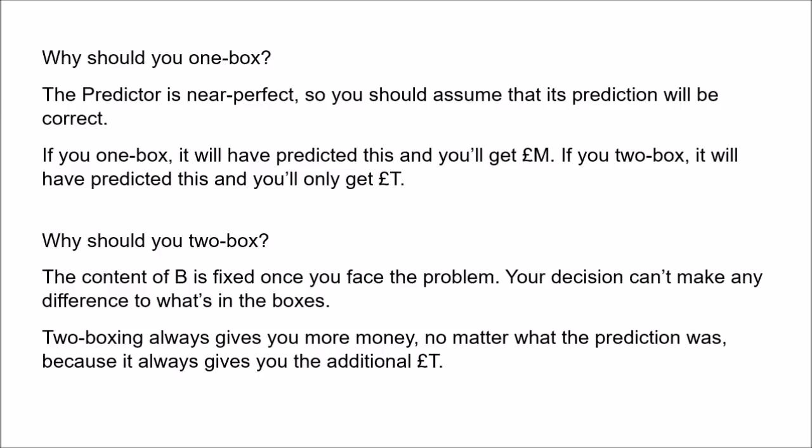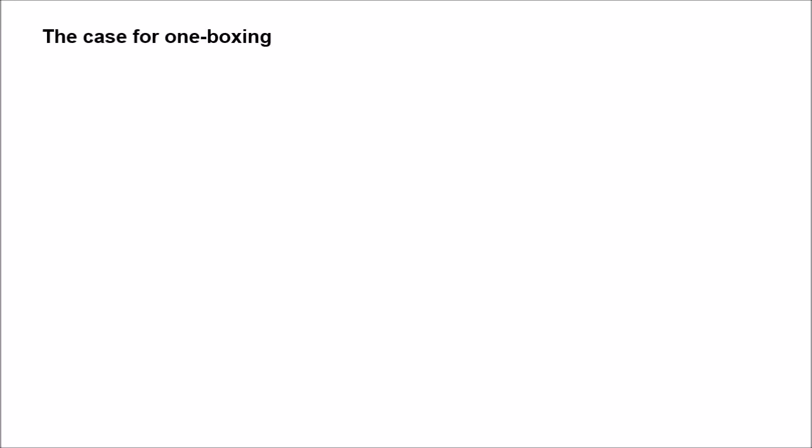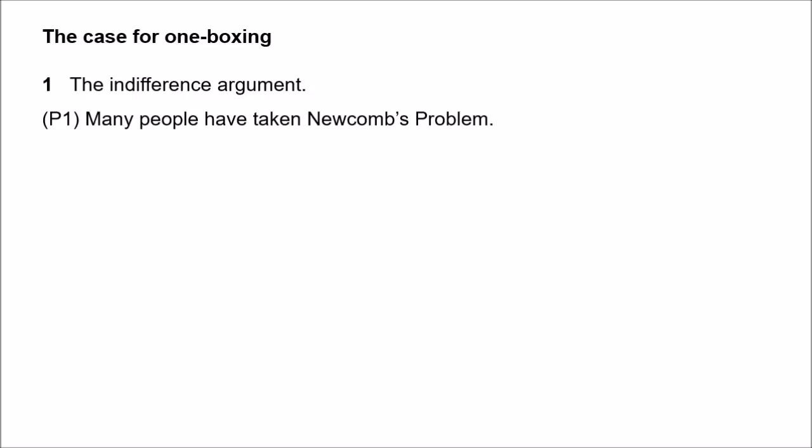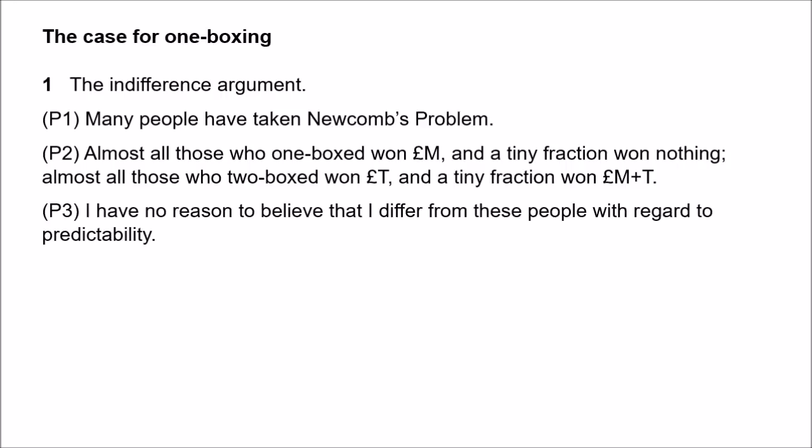Let's look at some arguments in a bit more detail, starting with arguments for one-boxing. First, there's what is sometimes called the indifference argument, and Marian Ledwig formalises it like this. Premise one: many people have taken Newcomb's problem — we can imagine it's been done many times in the past. Premise two: almost all of those who took one box won a million pounds, while almost all of those who took two boxes won only a thousand pounds. Premise three: I have no reason to believe that I differ from these people with regard to predictability — there is nothing special about me that would justify believing I'm likely to beat the odds if I were to take both boxes.